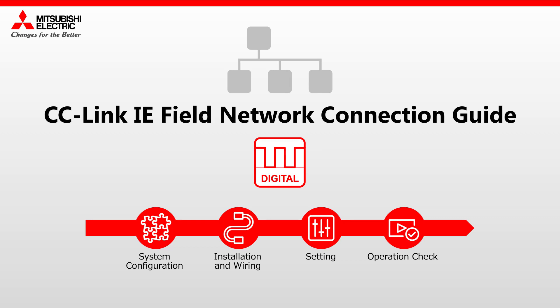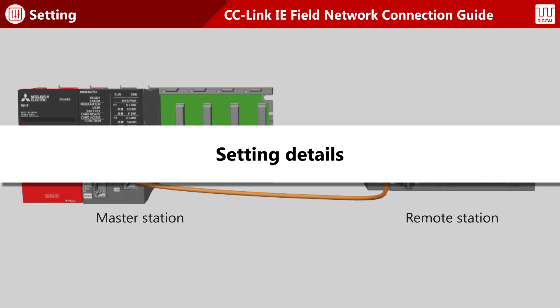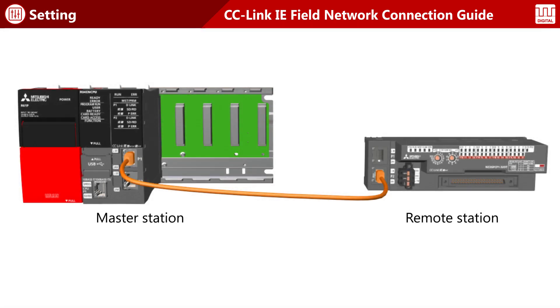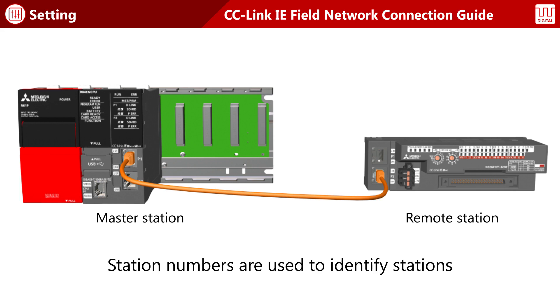CC-Link IE Field Network Connection Guide for Digital I/O. Now that the wiring is finished, let's move on to the setting. Just as individual telephones are assigned telephone numbers for identification, station numbers are used to identify stations.